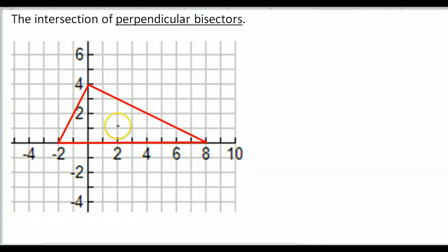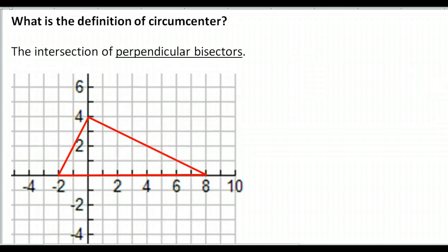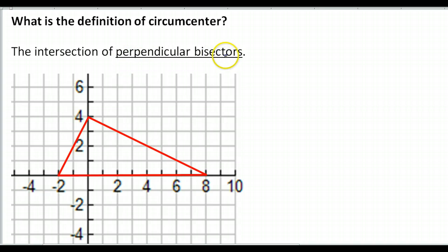Here we are on graph paper. If I want to find the circumcenter of this triangle, I need to create at least two perpendicular bisectors. So here we go.